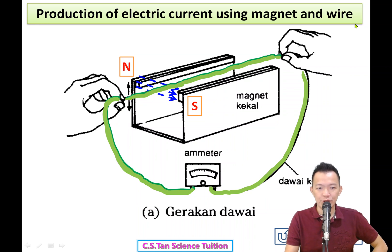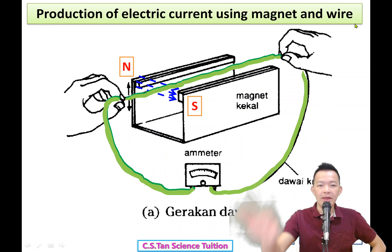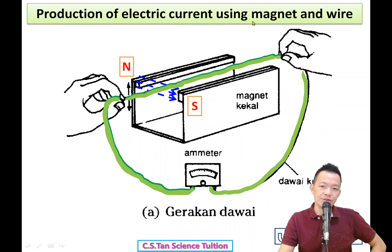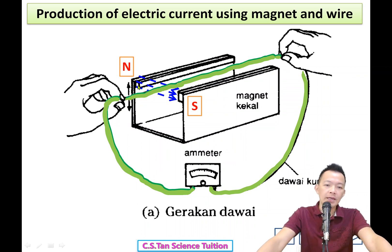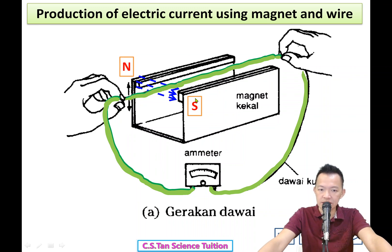So, production of electric current using magnet and wire - 用magnet跟wire产生电能. How to make it? First, prepare two pieces of magnets and put them face to face with different poles - 北极南极, north pole facing south pole.